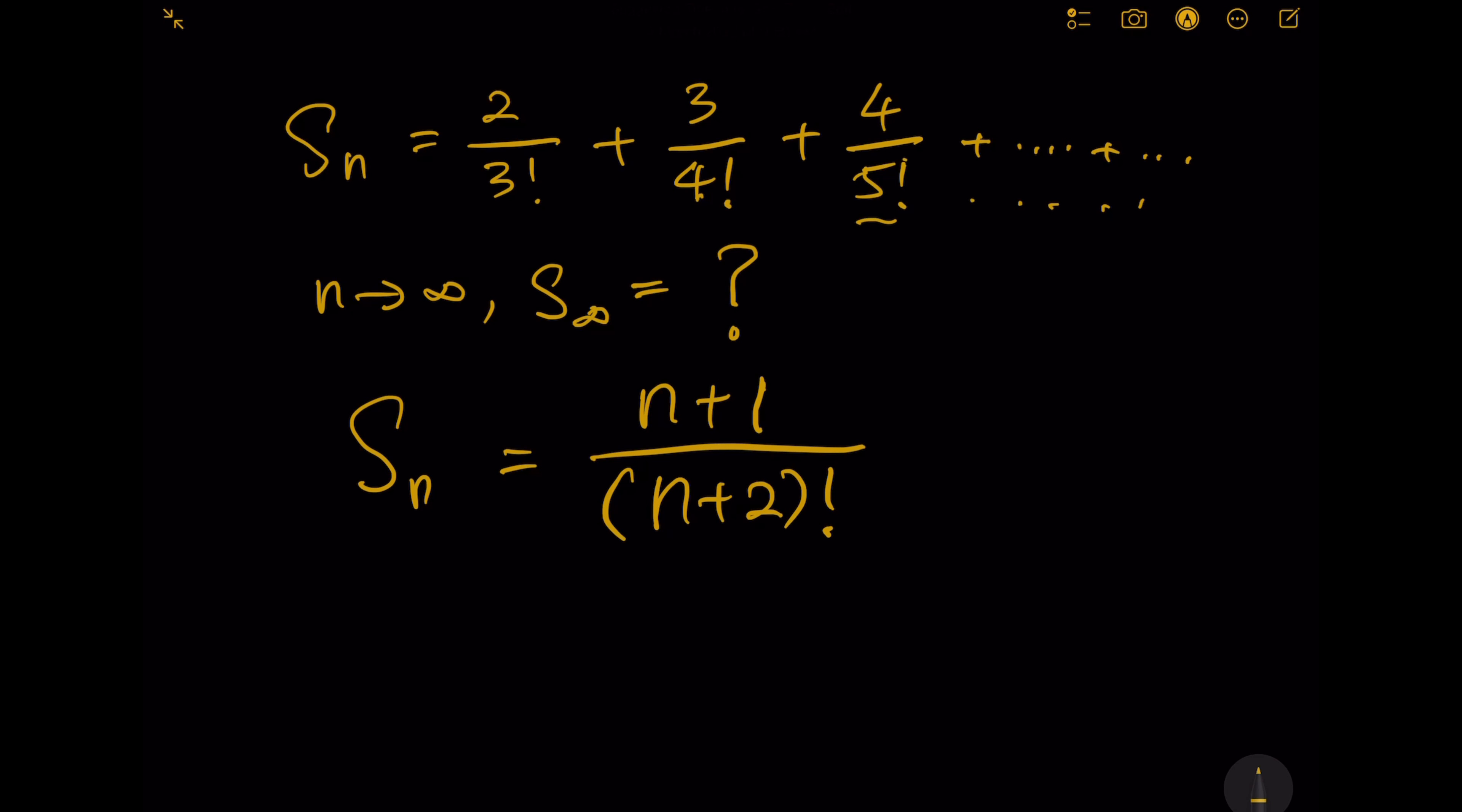If we directly plug n equals infinity into this equation, we are looking for n plus 1 over n plus 2 factorial where n goes to infinity. We may be able to find the answer, but it will be quite challenging, so we're not going to use this way today.